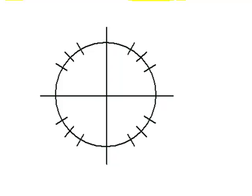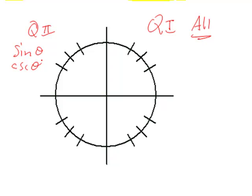For example, we know that in the first quadrant, quadrant one, everything's positive. We might say that all functions are positive. And in quadrant two, only the sine and its reciprocal cosecant are positive. All other trig functions are negative there.